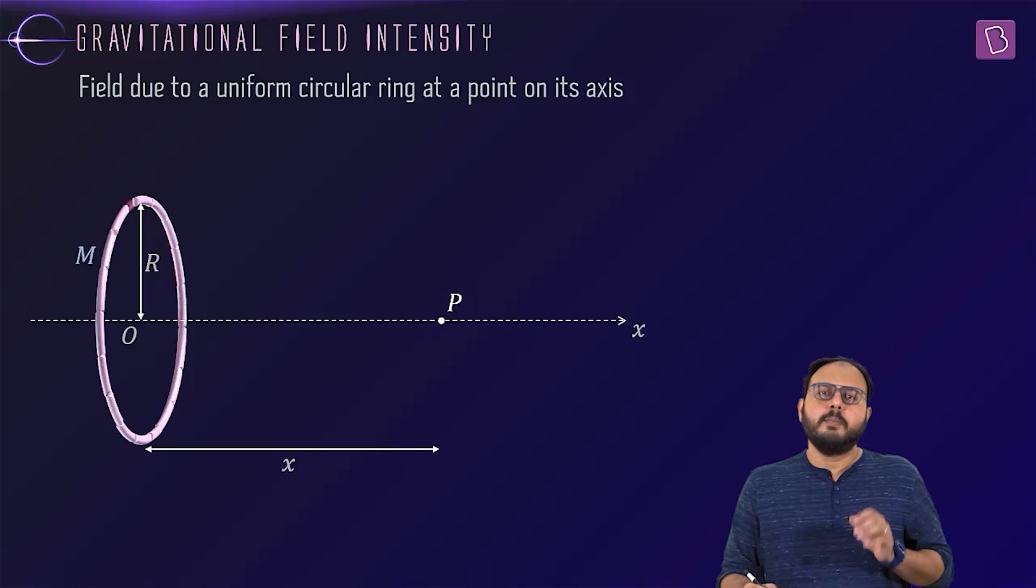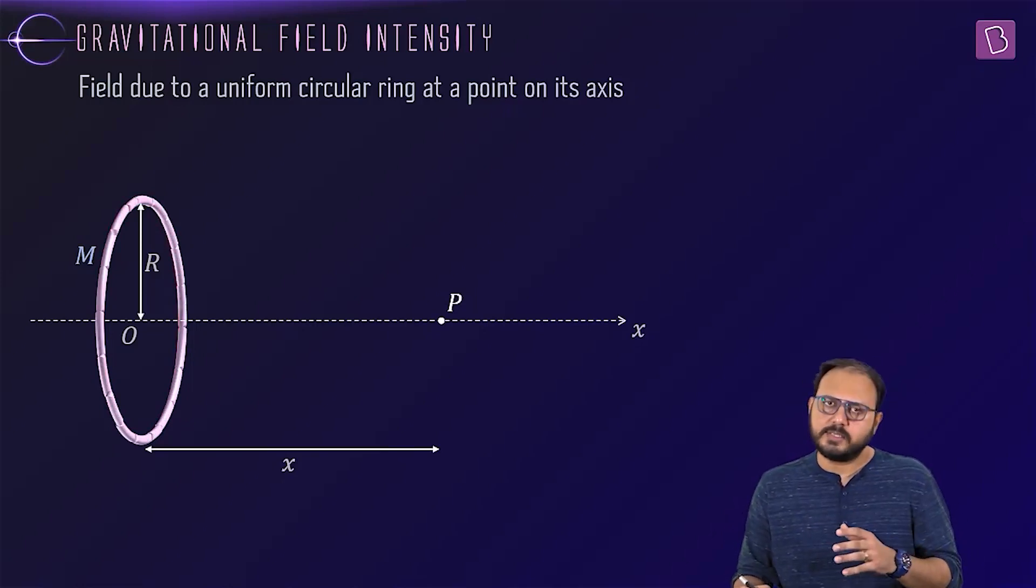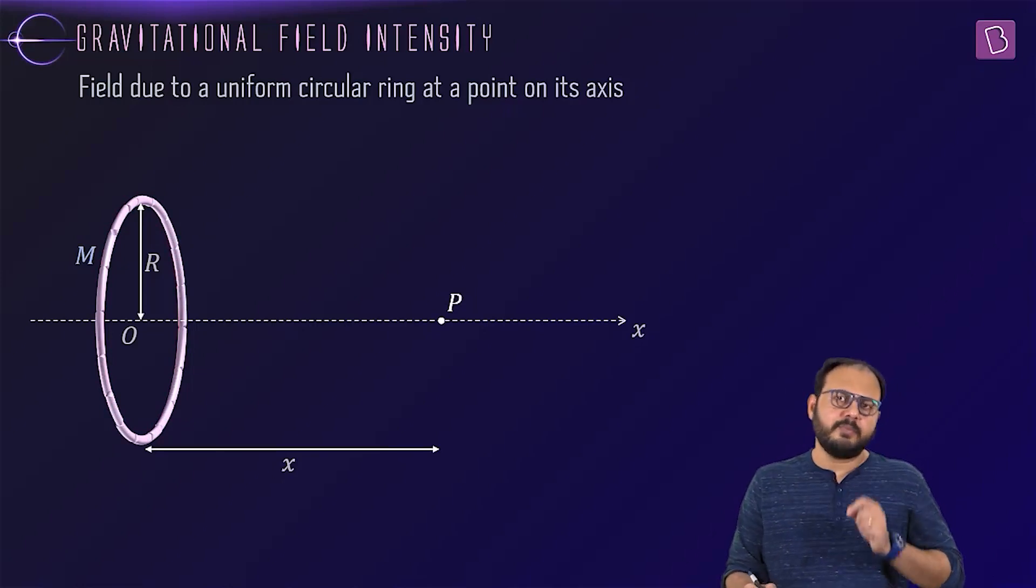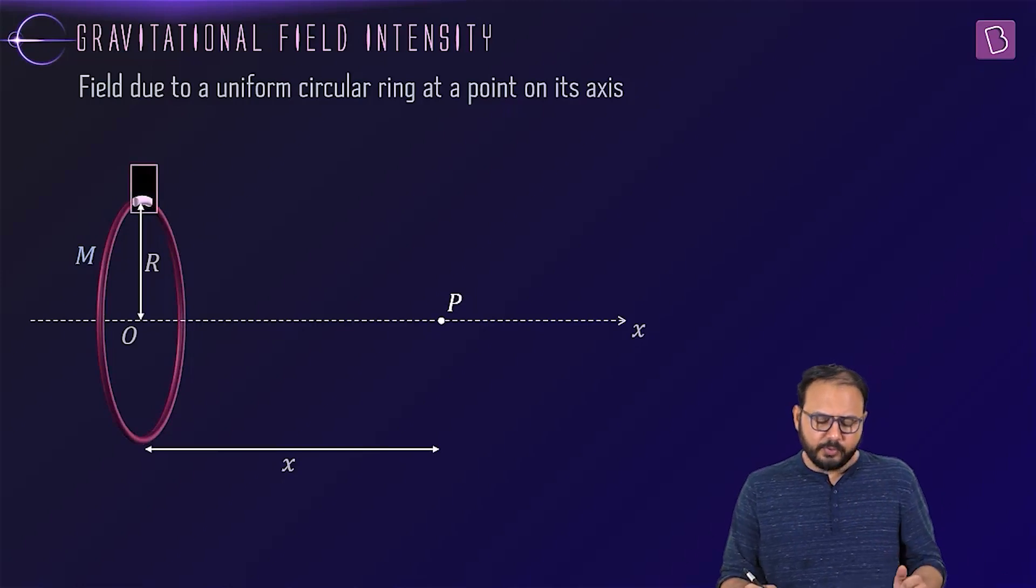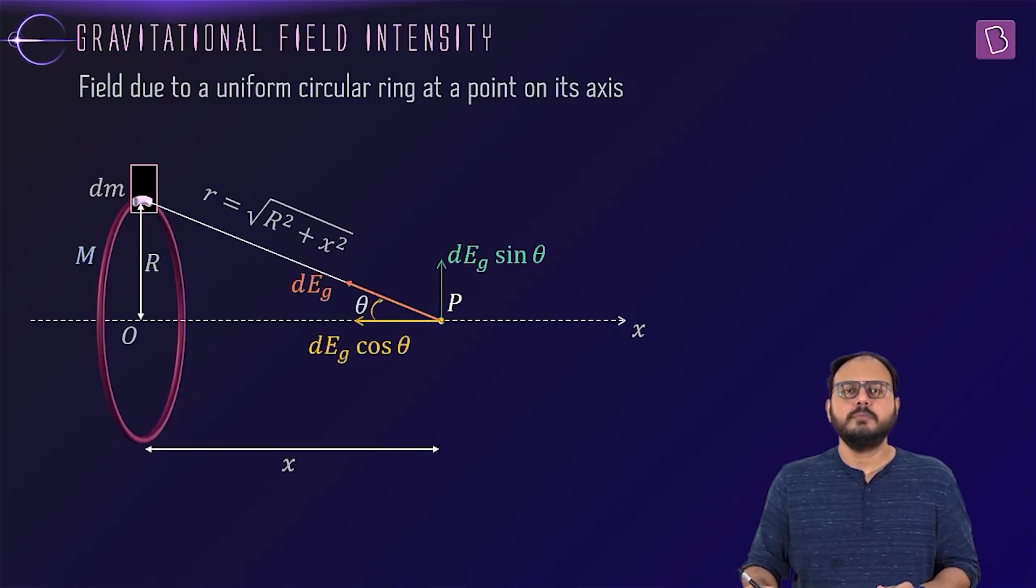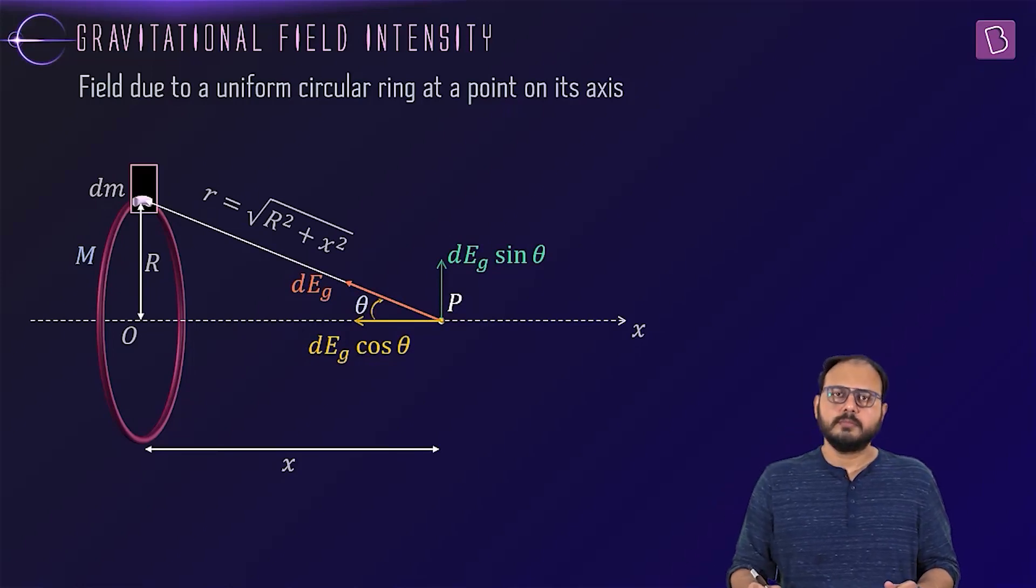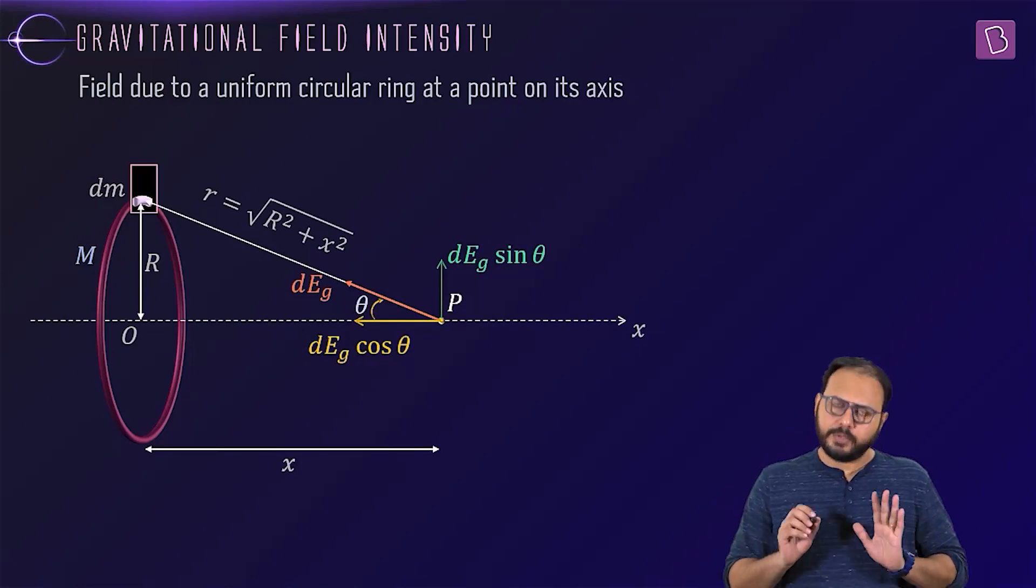The modus operandi does not change. Divide the ring into small masses. Let's take one of the mass dm, and let's find out the field due to that dm. What's the formula for mass? gm by r square. So gdm by r square. Who plays r? Under root r square plus x square. Check it out. Please check it out.